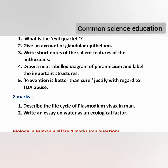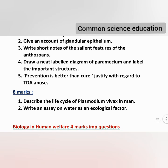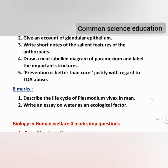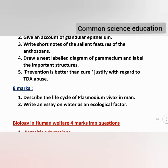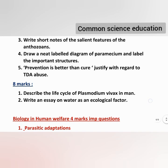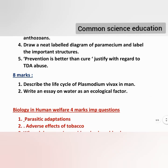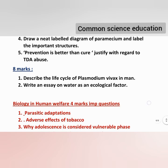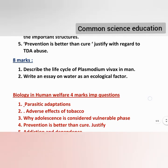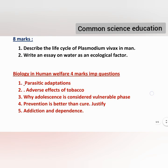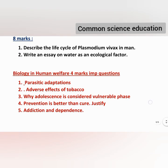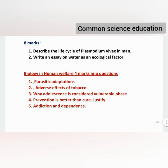Paramecium and Euglena are very good diagrams to know. Along with labeling, you need at least five to six labels. These diagram questions are worth four marks.